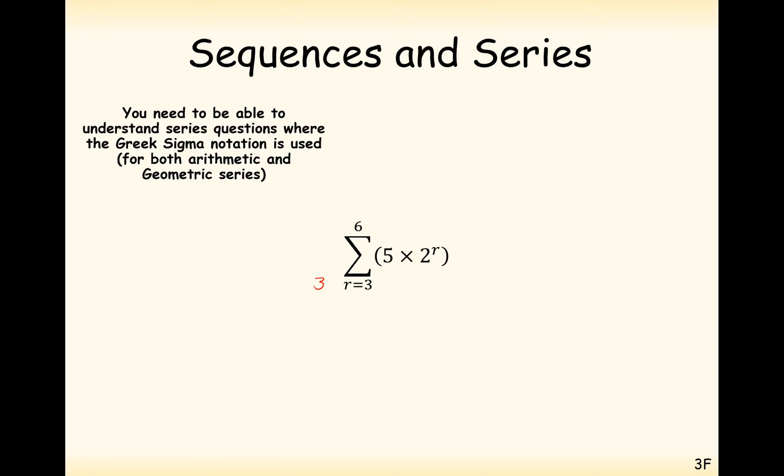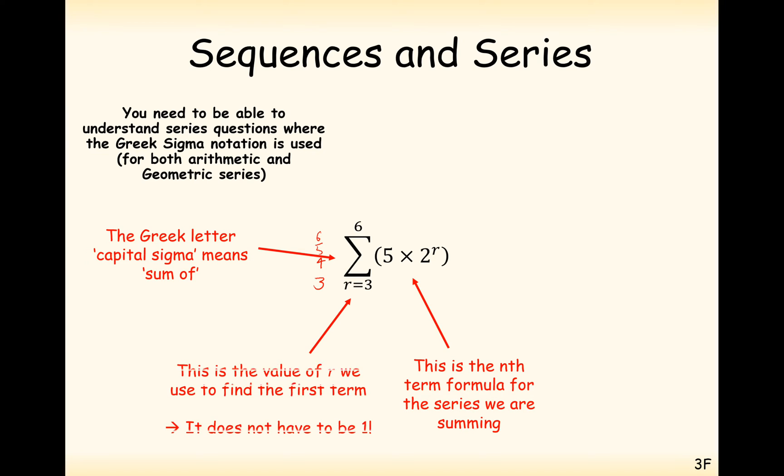You take the numbers from 3 up to 6, substitute them into the formula, work out what the answer is for each of the four terms, and then add up the results. So it means the sum of... This is the nth term formula that we are summing. And this means starts from the value 3 and go up to the value 6.